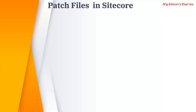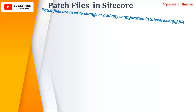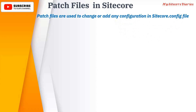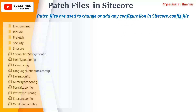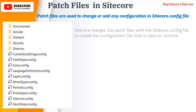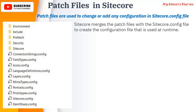Let's start with the basics — what are patch files in Sitecore? Patch files are used to change or add any configuration in the Sitecore config file. There are many configuration files in the Sitecore app_config folder. Sitecore merges the patch files with the Sitecore config file to create the configuration used at runtime.